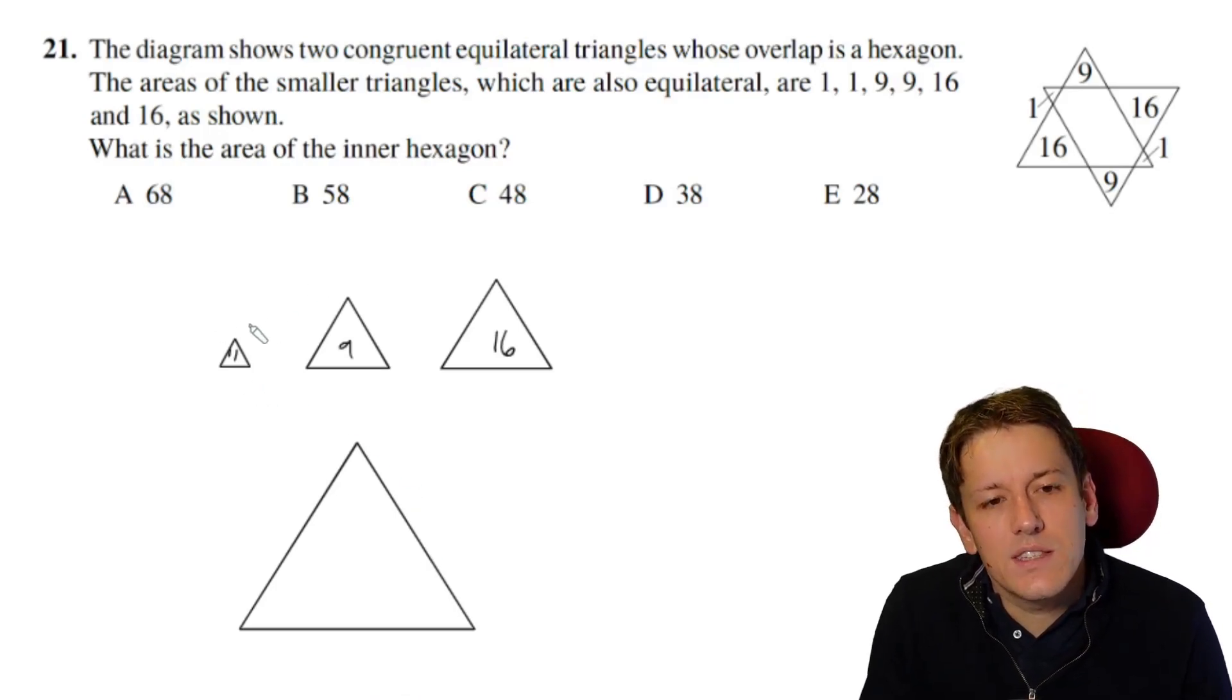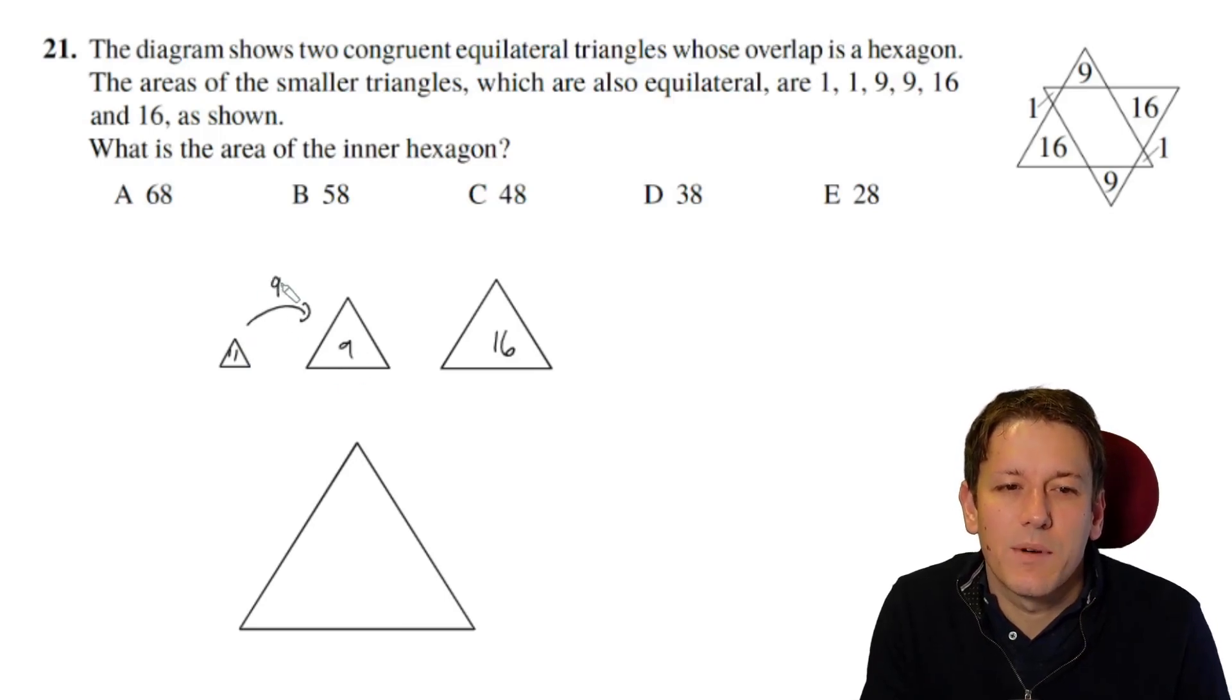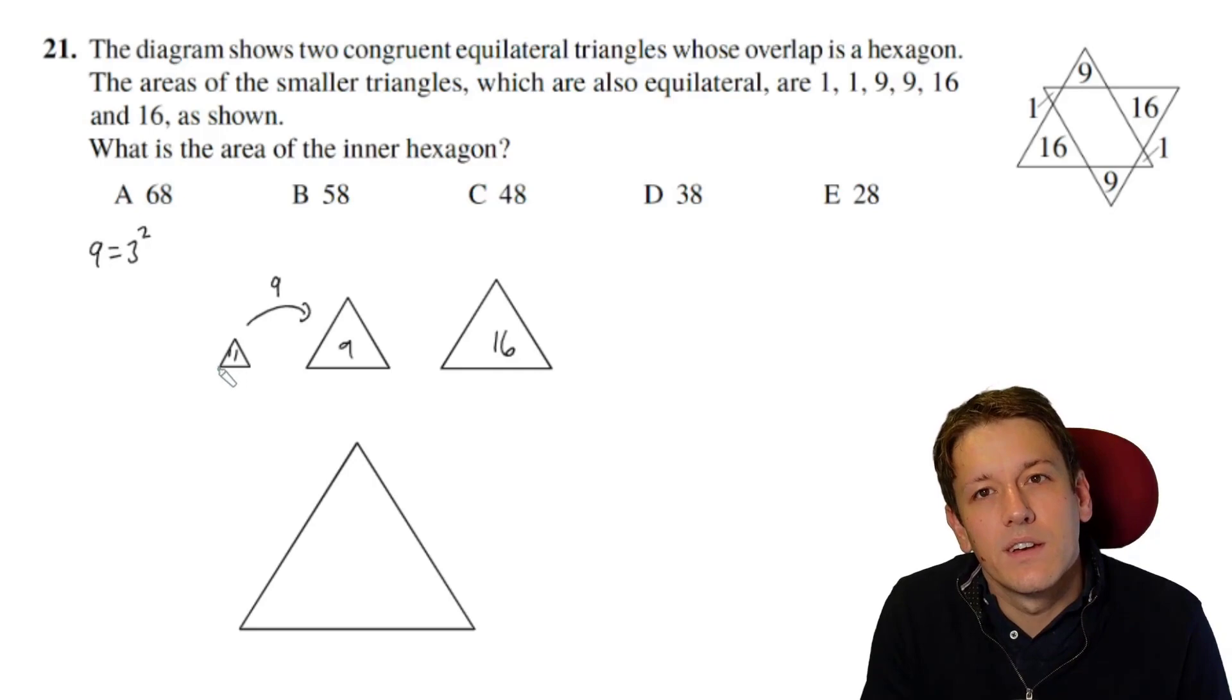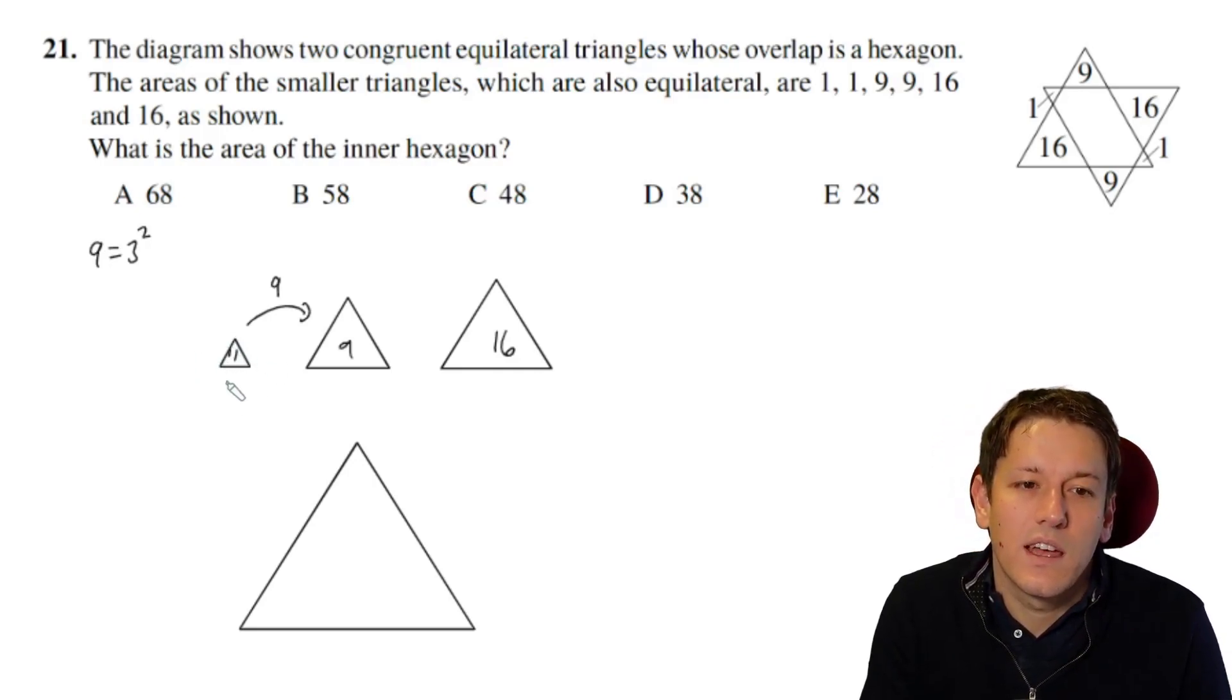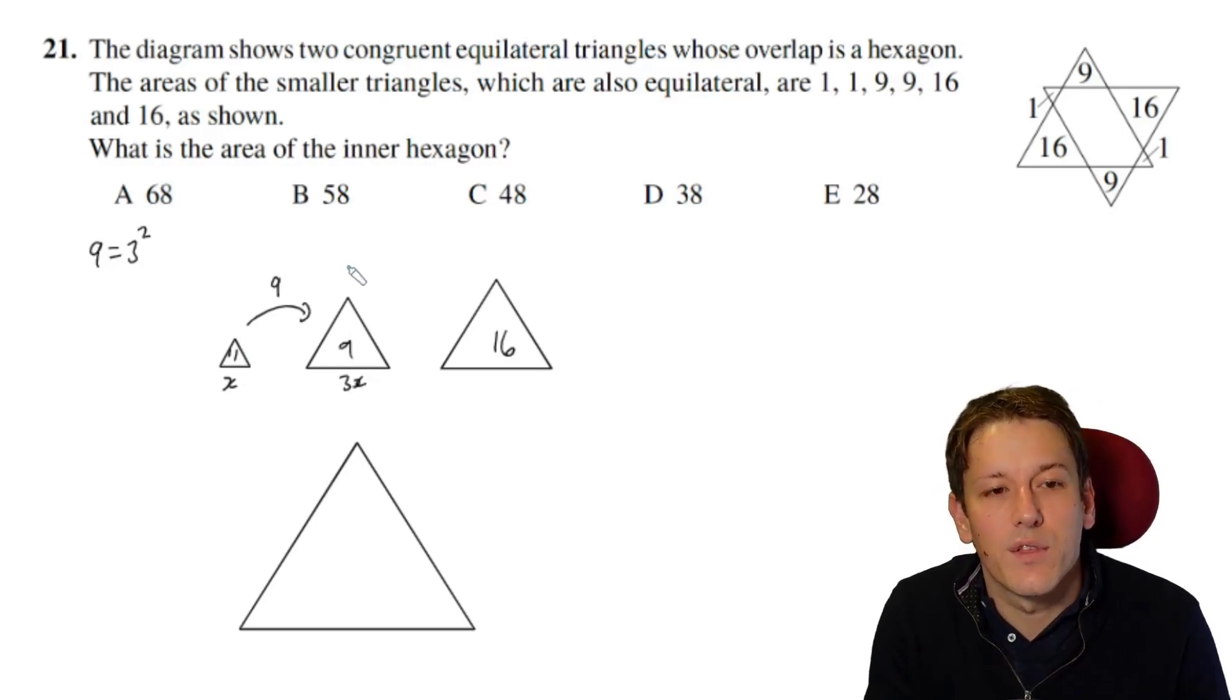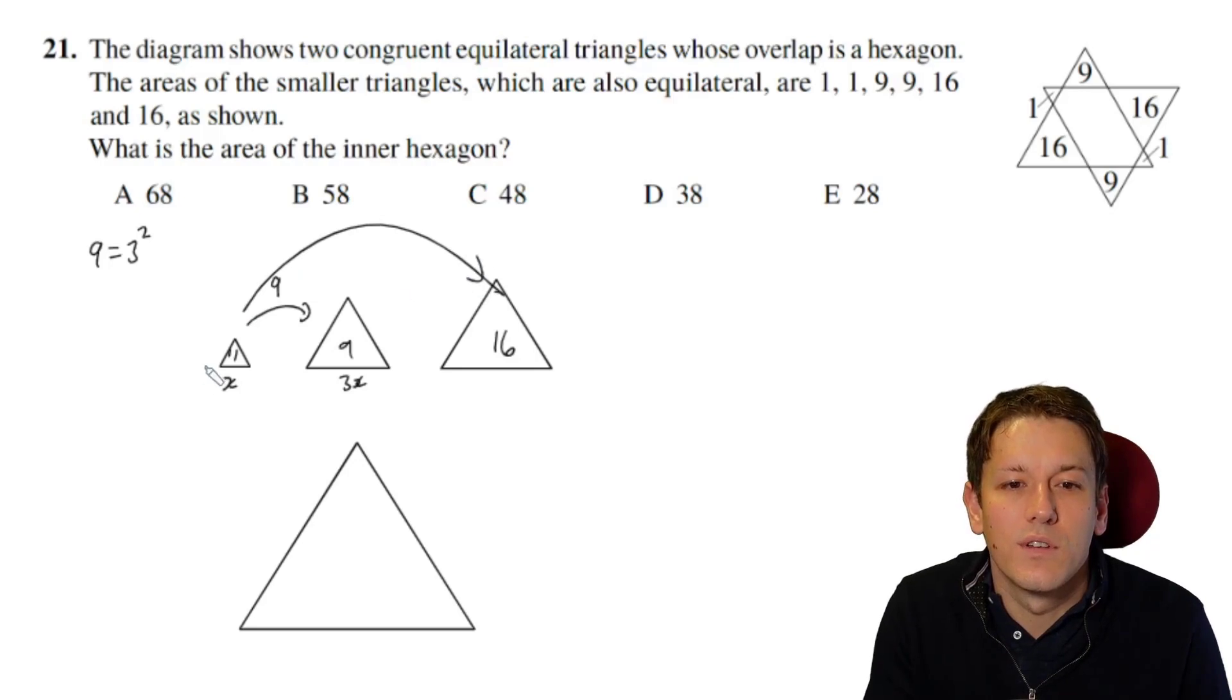So we can see that the area here, skip from the first one to the second one, scales up by a factor of 9. Nine is 3 squared. So whatever the length of the side of the original triangle is here, let's call it x, then this one must have length 3x. Similarly, if I go from the first one to the last one here, there's a scale factor of 16, and 16 is 4 squared. So the length of this triangle must be 4 times the length of the original one.